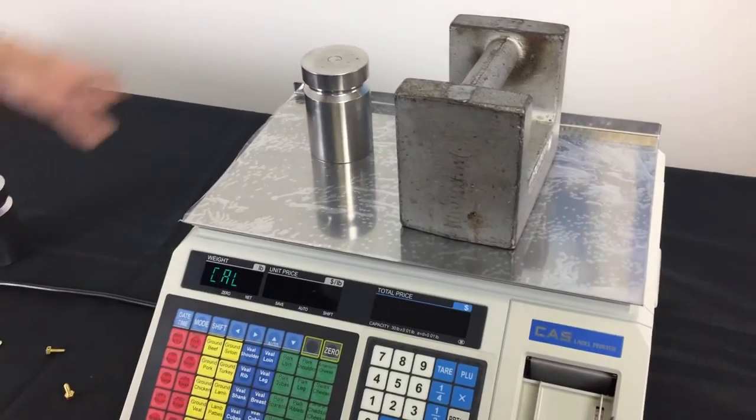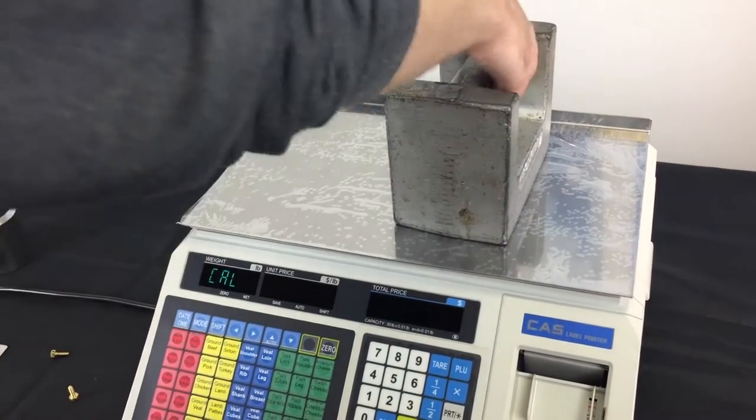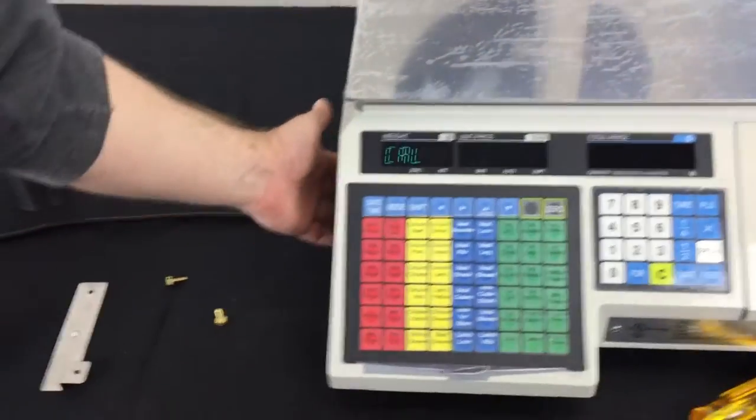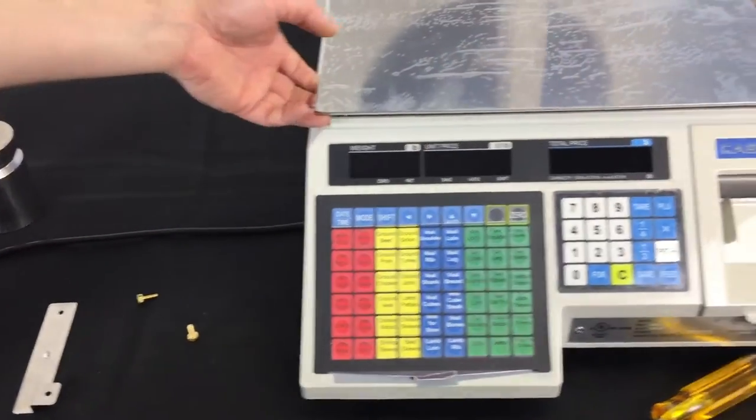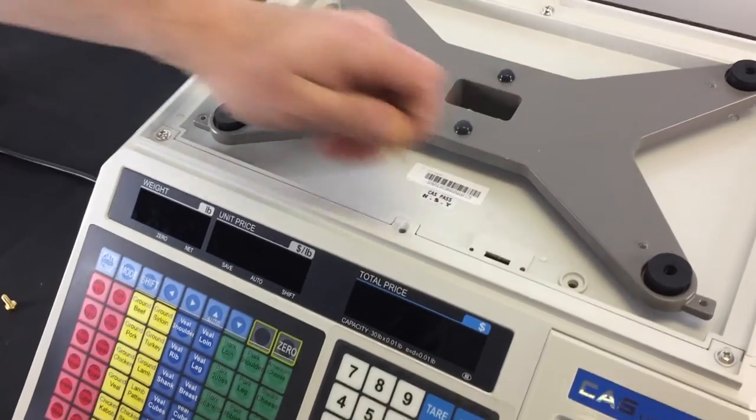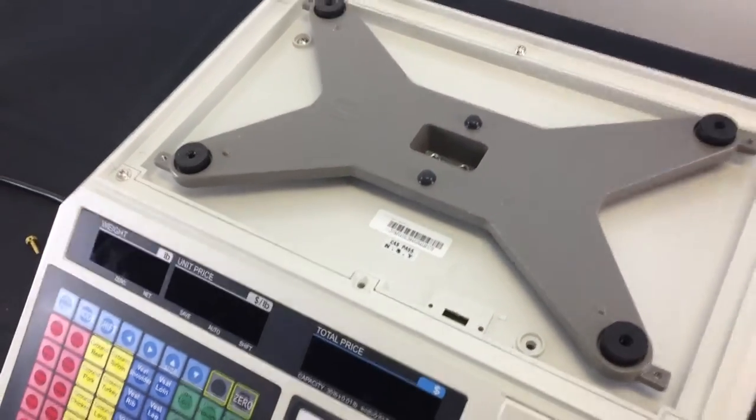Now remove your weight from the scale. After you remove your weight, find that power switch on the side and turn it off. Once you do so, remove your platter again to have access to that switch. Now slide that switch back to the right side to put it back into the regular weight mode.